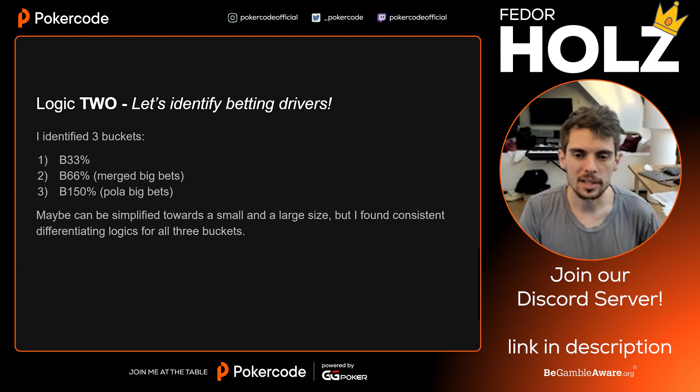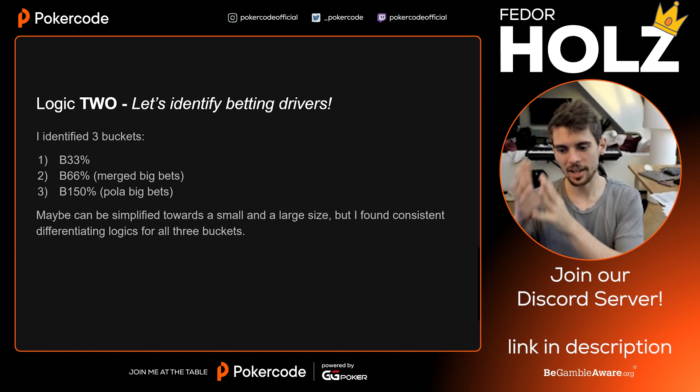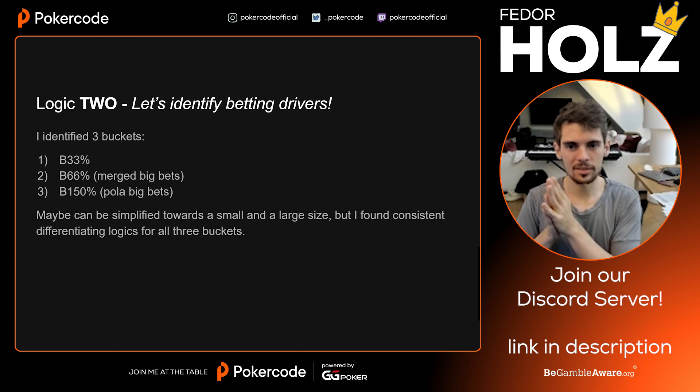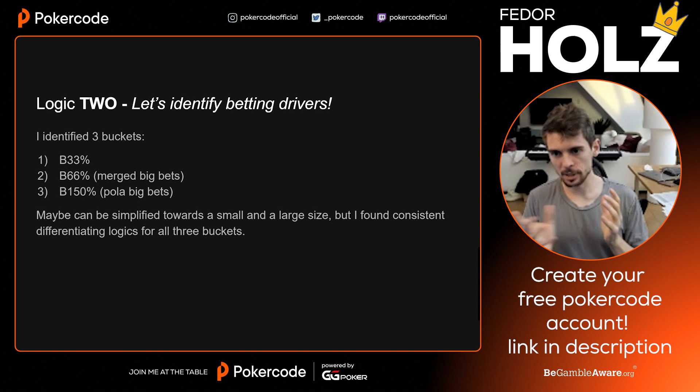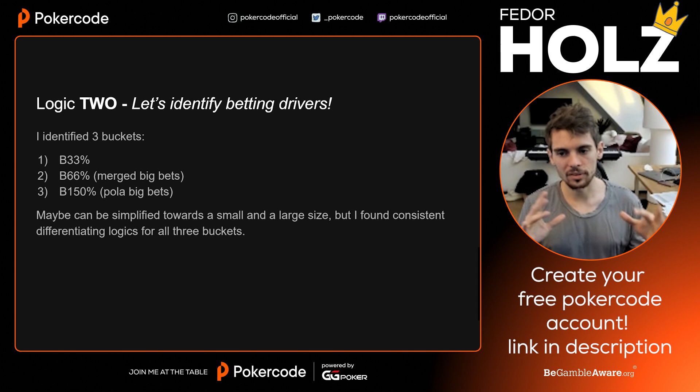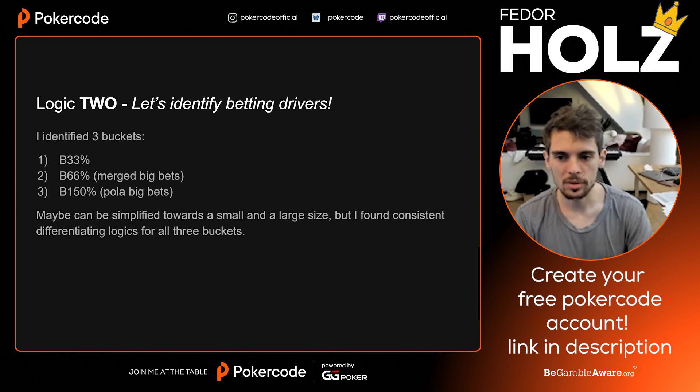Let's get to Logic 2, which is mostly about betting and identifying betting drivers. First, it's important to establish the baseline: we know we have to play defense given the equity distribution. Now let's identify when we want to bet and what sizing to use. I identified three buckets: a small bet, a big bet, and an overbet — b33, b66, and b150. It could be simplified to two bets, but I personally like the logic of these three because I saw meaningful differences in the logical approach to each.